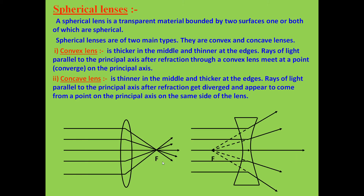A concave lens is thinner in the middle and thicker at the edges. The rays of light parallel to the principal axis diverge after passing through it, which is why this lens is known as a diverging lens. It appears as if the light rays are coming from a point called the principal focus, which lies on the same side where the object is present. In a convex lens, the principal focus is on the right side, whereas in a concave lens it is on the left side.